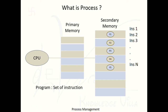Now we will define the process. Suppose out of these five programs, P3 is going to be executed. The operating system will bring that program from secondary memory into primary memory, and the CPU is allocated to that program. At that time, that program becomes a process. It is the same set of instructions and lines of code — the same portion that was in secondary memory now reaches primary memory and becomes the process.